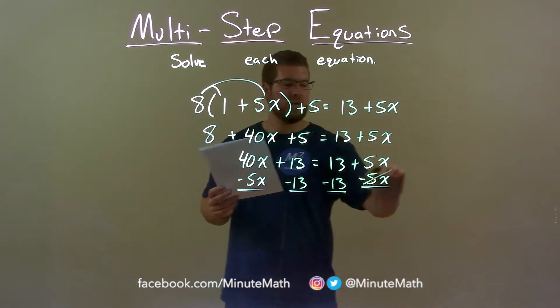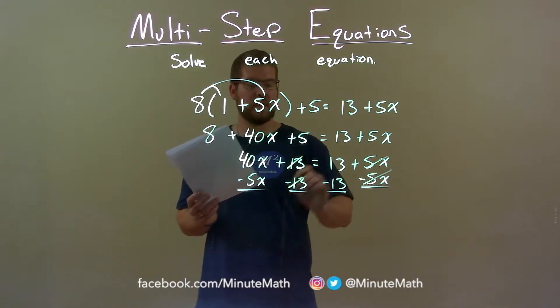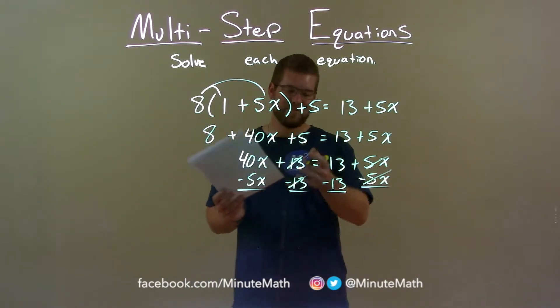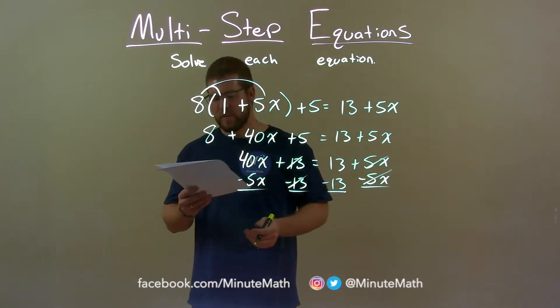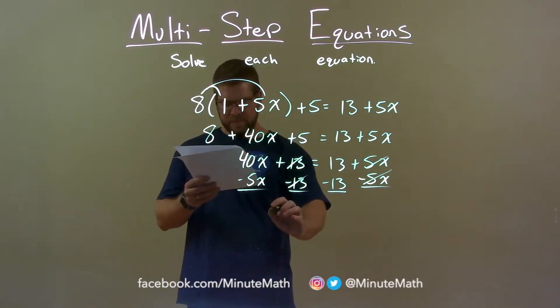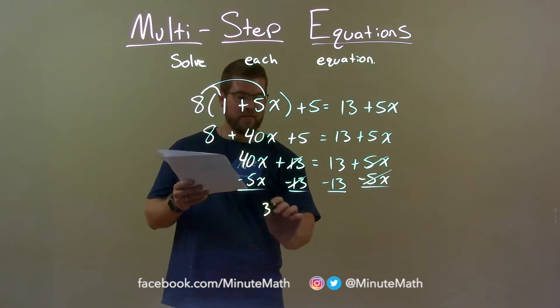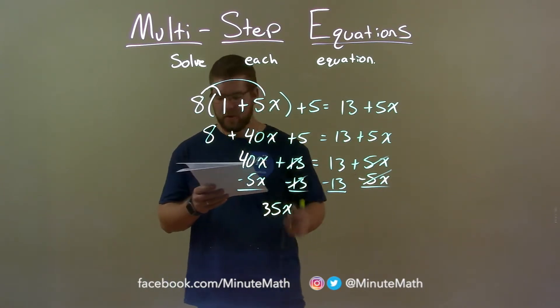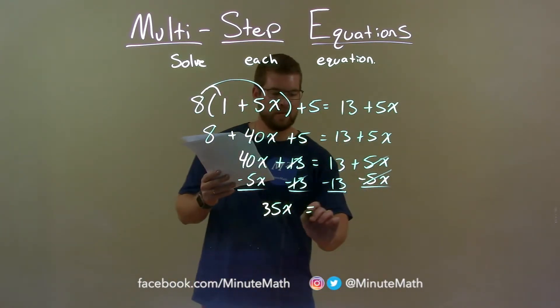x's cancel, 5x's cancel left, 13's cancel, 5x's cancel on the right, 13's cancel left and now I'm left with 40x minus 5x which is 35x and 13 minus 13 is 0.